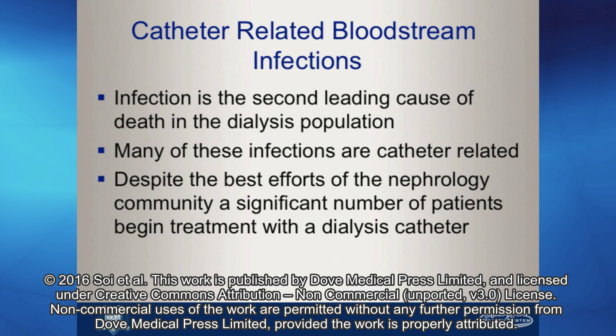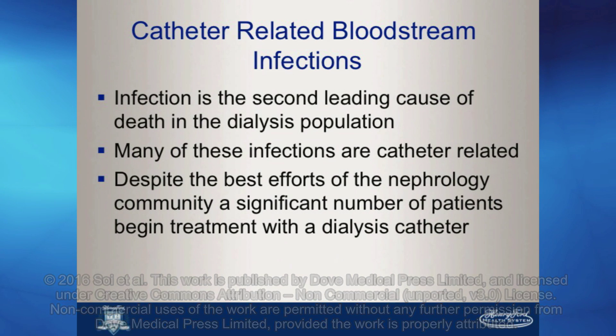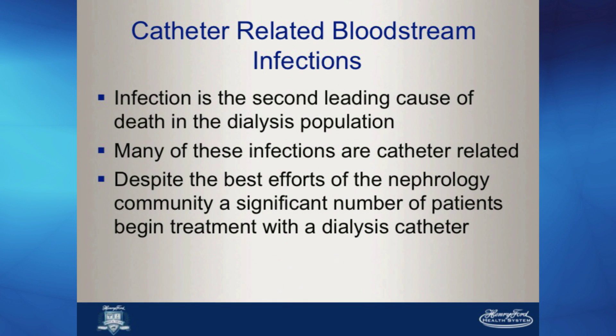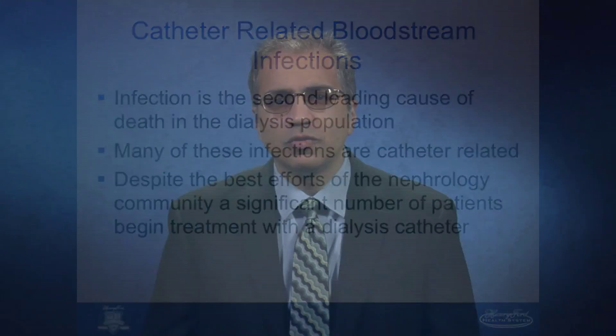Ideally, hemodialysis access would involve placement and maturation of an arteriovenous fistula prior to the initiation of therapy. Unfortunately, about 80% of new patients begin hemodialysis with a catheter due to logistic and physiologic factors involved in AV fistula creation and development.